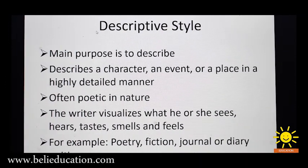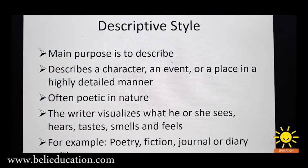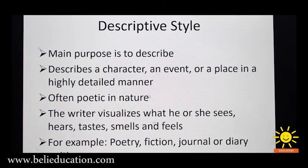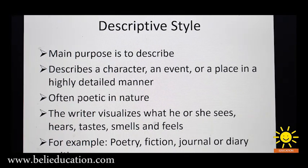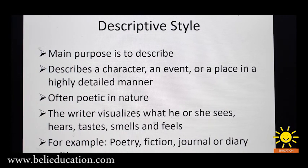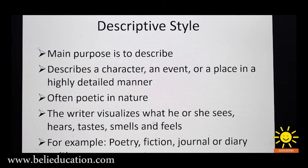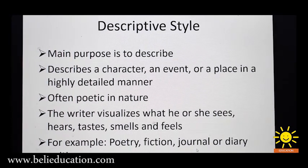The descriptive style of writing. The main purpose of the descriptive style of writing is to describe. It is a style of writing that focuses on describing a character, an event, or a place in great detail. It can be poetic when the author takes the time to be very specific in his or her descriptions. In a descriptive style of writing, the author visualises what he or she sees, hears, tastes, smells, and even feels. Few examples of the descriptive type of writing are the style used in poetry, in journal or diary writing, and also in passages in fiction.